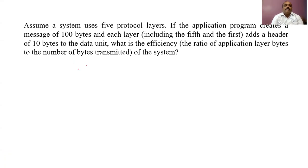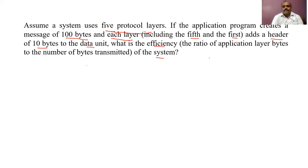Let's take the first example. Assume a system uses five protocol layers. If the application program creates 100 bytes, and each layer — including the fifth and the first — adds a header of 10 bytes to the data unit, what is the efficiency of the system? The efficiency is defined as the ratio of application layer bytes to the number of bytes transmitted.